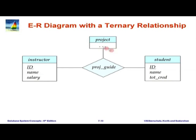It is a little hard to come up with truly ternary examples — this one is a bit contrived, but it reflects the fact that most relationships are binary. The diagrammatic representation shows instructor, student, and project as entity sets, with project guide as a ternary relationship shown as a diamond linked to all three.